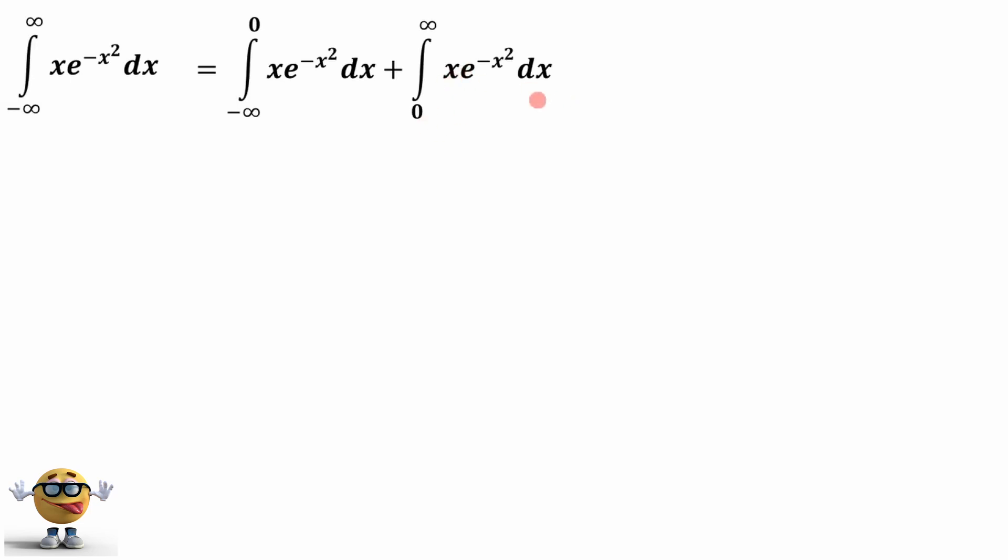But we're going to work on this term now. So we're going to flip the limits. And if we do that, putting the zero up and infinity down, this becomes a negative. We've got to flip the sign. And from here, we're going to do a substitution. If x goes to infinity, then negative x goes to negative infinity.